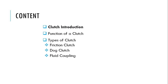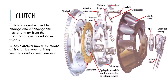Today we are going to discuss the clutch: introduction, function of a clutch, and types of clutch used in tractors. The different types available are friction, dog, and fluid coupling. A clutch is a device which engages and disengages the engine from the transmission gear and the drive wheels. Clutch transmits power by means of friction between driving members and driven members. This is the exploded view of the clutch — you can easily see the different parts, including the friction plate which comes in contact with your transmission shaft so that power can be transmitted from the engine to the wheels.